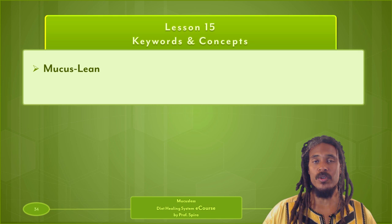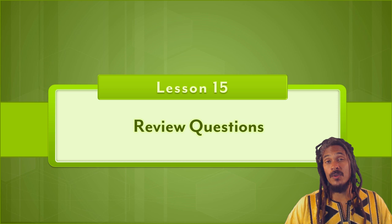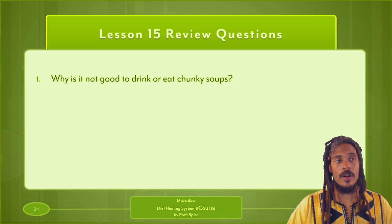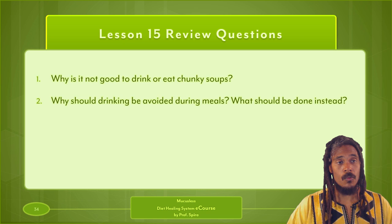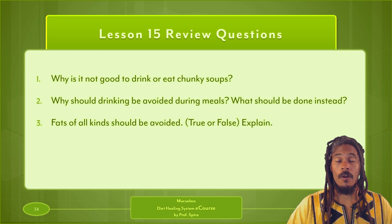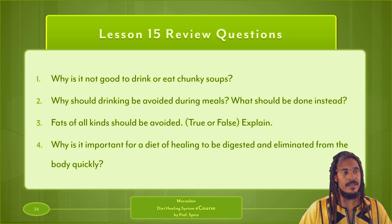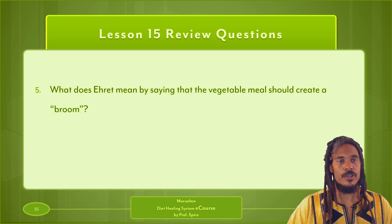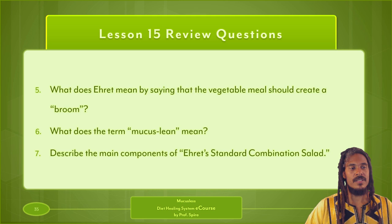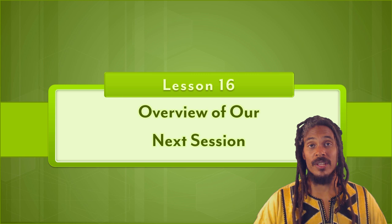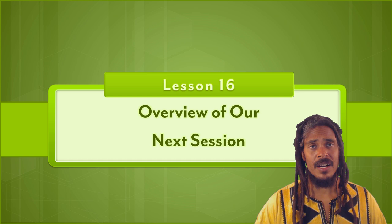The review questions for Lesson 15: One, why is it not good to drink or eat chunky soups? Two, why should drinking be avoided during meals, and what should be done instead? Three, fats of all kinds should be avoided — true or false, and why? Four, why is it important for a healing diet to be digested and eliminated from the body quickly? Five, what does Ehret mean when he says the vegetable meal should create a broom? Six, what does the term 'mucus lean' mean? Seven, describe the main components of Ehret's standard combination salad. In our next session we will go over Lesson 16, Transition Diet Part Two, exploring transitional methodology and specialized recipes and menu plans for different situations. Until then — peace, love, and breath.